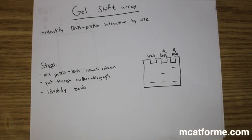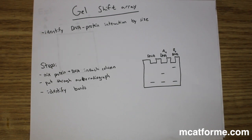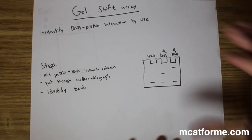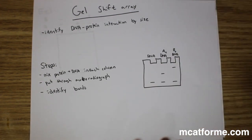We're going to be looking into gel shift arrays. Gel shift arrays have a lot of different names: EMSA, band shift assay, gel shift, or gel array. It's not really too important what exactly the name is because you'll see from the diagrams exactly what we're going to be talking about.